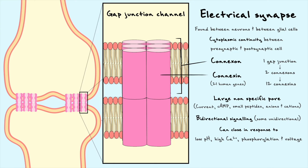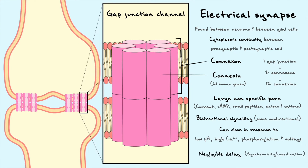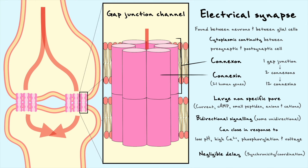Another consequence of the continuous cytoplasm is that there is essentially no delay in the response from the postsynaptic cell after a signal is sent from the presynaptic cell. For example, if an action potential travels through the presynaptic cell and the current passing through the gap junction is above threshold for the postsynaptic cell, an action potential can be fired almost instantaneously.